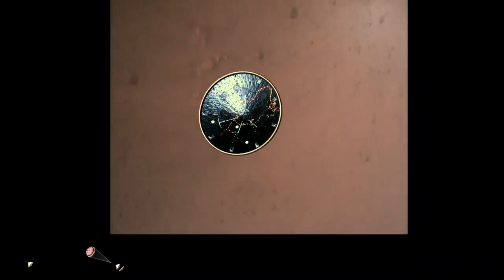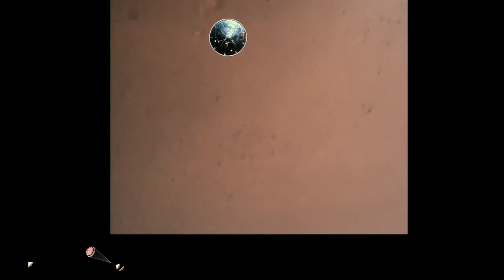Heat shield separated. Perseverance has now slowed to subsonic speeds, and the heat shield has been separated. This allows both the radar and the cameras to get their first look at the surface. Current velocity is 145 meters per second at an altitude of about 9.5 kilometers above the surface.